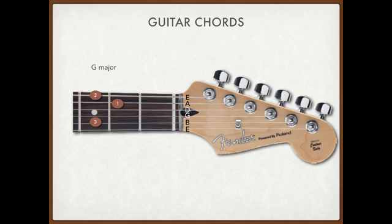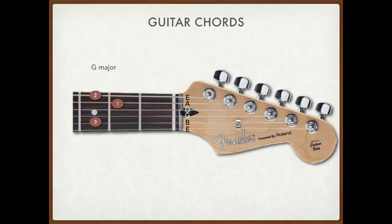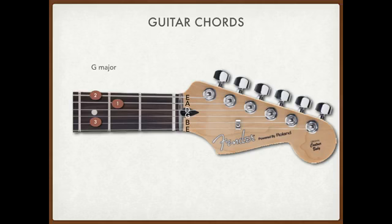I think this is a good thing to start practicing. Go G major to C major, back and forth. Then try G major to E minor. I would suggest trying as many different combinations as you can. To start, try G to C, then G to E minor, then C to E minor, then D to E minor — try as many different combinations as you can. Then C major to D major.